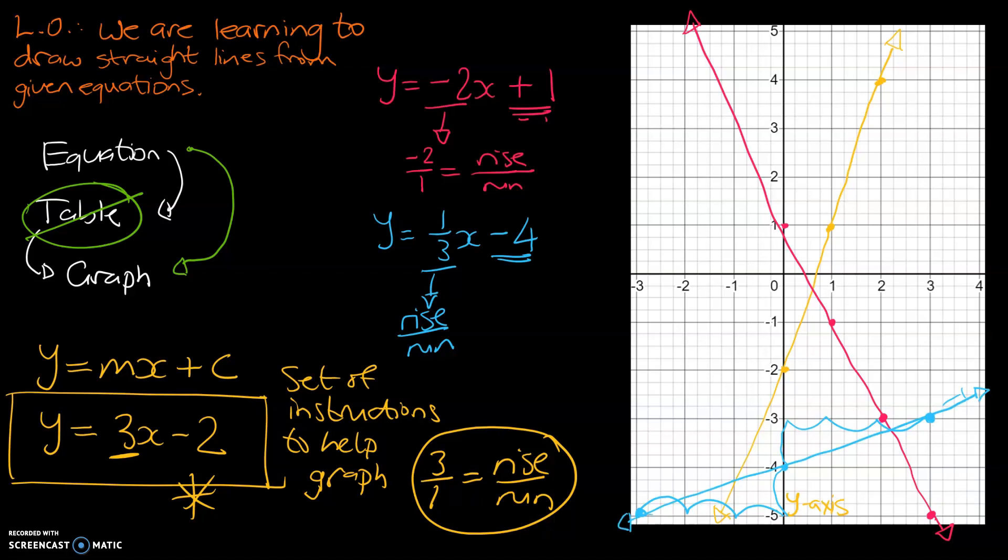And, we'll get rid of our workings. We can see our graph a bit better. But, that there would be the visual representation of 1 third of x minus 4. We can see that's a lot flatter, because that gradient is actually a fraction.